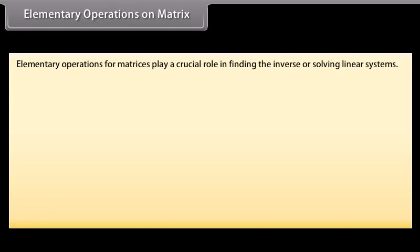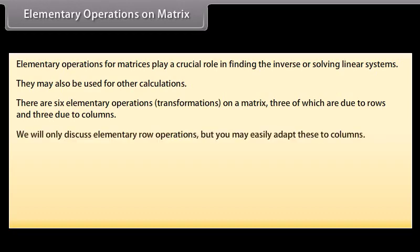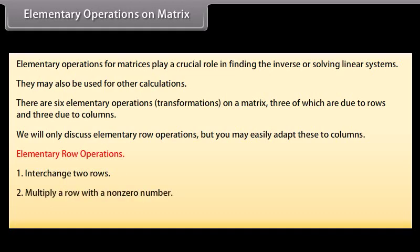Elementary operations on a matrix: Elementary operations for matrices play a crucial role in finding the inverse or solving linear systems. They may also be used for other calculations. There are six elementary operations or transformations on a matrix — three due to rows and three due to columns. The three elementary row operations are: interchange two rows, multiply a row with a non-zero number, and add a row to another one multiplied by a number.